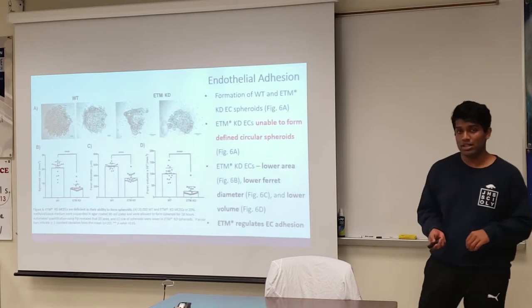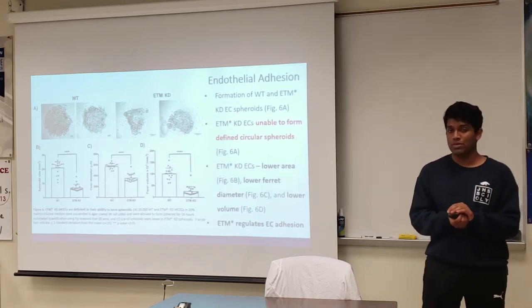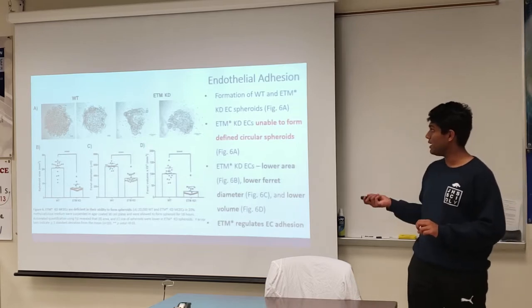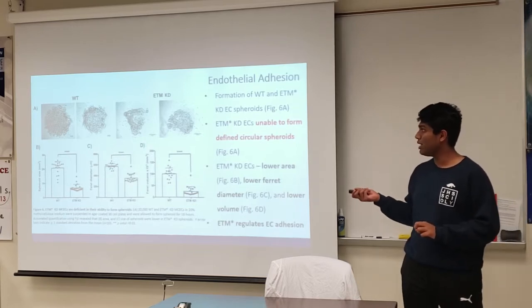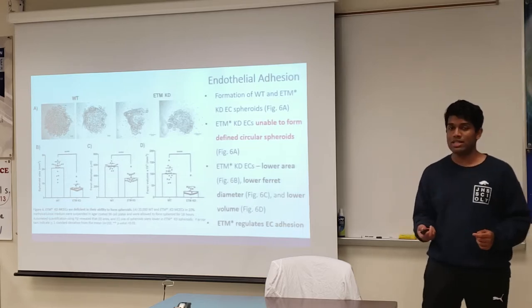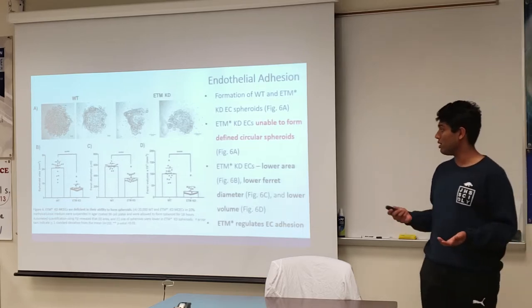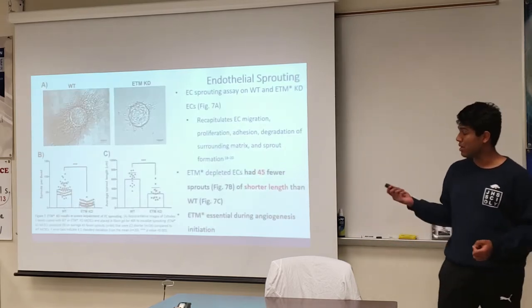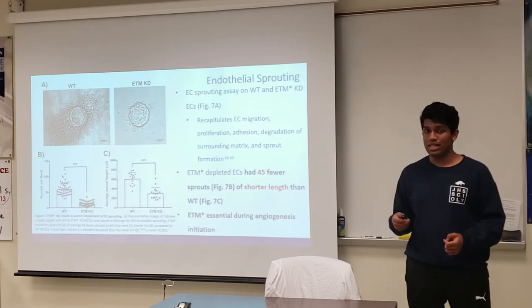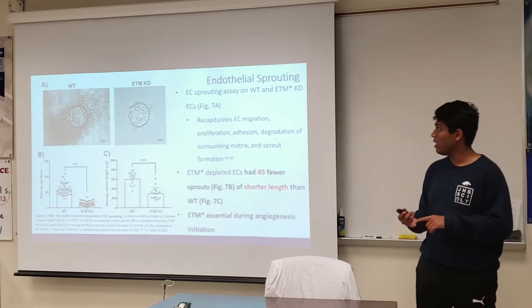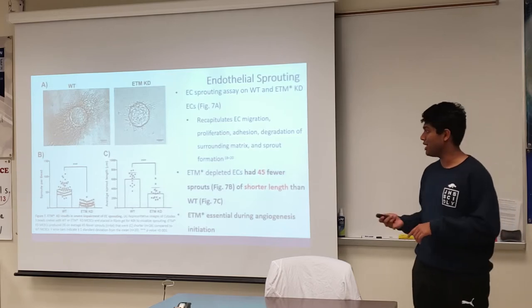Next, endothelial cell adhesion. The ability of endothelial cells to form spheroids is dependent on strong cell-to-cell adhesion. The depletion of ETM resulted in an impaired ability to form spheroids of defined shape and structure, thereby suggesting that ETM is essential for endothelial cell-to-cell adhesion. I then conducted an in vitro sprout formation assay, and I noticed that the depletion of ETM resulted in an impaired ability of endothelial cells to form angiogenic sprouts.